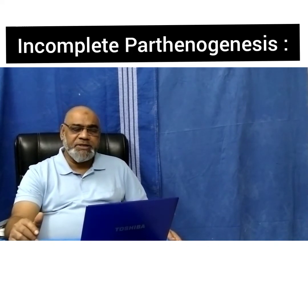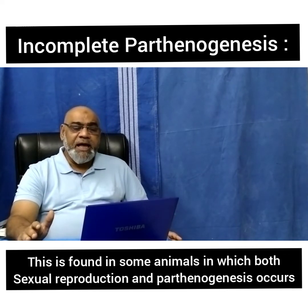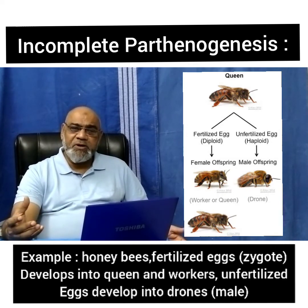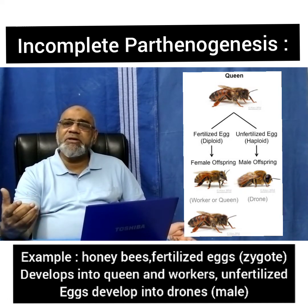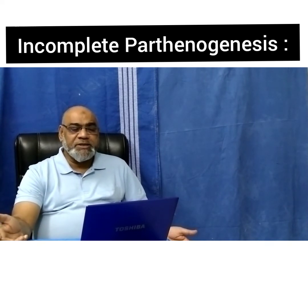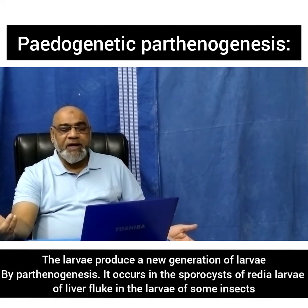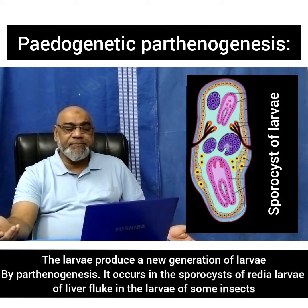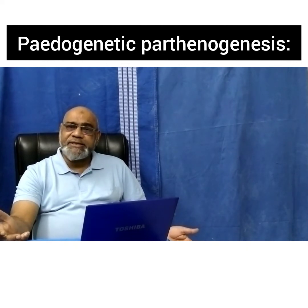What is incomplete parthenogenesis? This is found in some animals where both sexual reproduction and parthenogenesis occur. Example: in honeybees, fertilized eggs develop into queens and workers, whereas unfertilized eggs develop into drones or males. There is also paedogenetic parthenogenesis, where larvae produce a new generation of larvae by parthenogenesis. This occurs in sporocysts of trematode larvae, liver flukes, and larvae of some insects like gallfly.